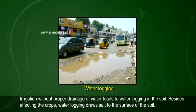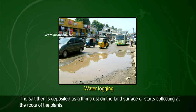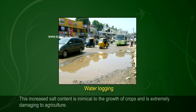Water logging and soil salinity: irrigation without proper drainage of water leads to water logging in the soil. Besides affecting the crops, water logging draws salt to the surface of the soil. The salt is then deposited as a thin crust on the land surface or starts collecting at the roots of the plants.